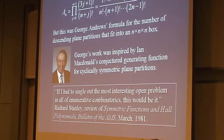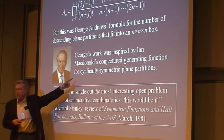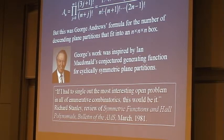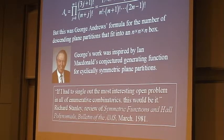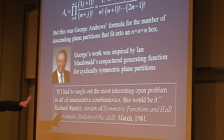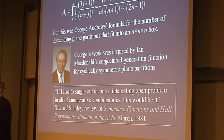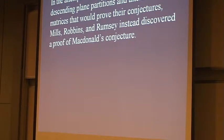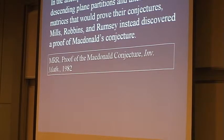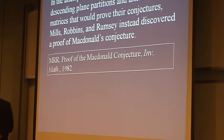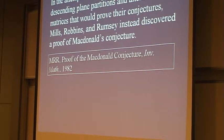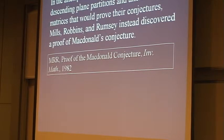The amazing thing is that Mills, Robbins, and Rumsey were interested in this problem because they hoped it would shed light on alternating sign matrices. In fact, it turned out to go in exactly the opposite direction — rather than the work of Andrews on descending plane partitions and MacDonald on cyclically symmetric plane partitions giving them insights into alternating sign matrices, what they'd figured out about alternating sign matrices gave them insights into those problems. In the attempt to find the connection, they actually succeeded in proving MacDonald's conjecture. This would appear in Inventiones in 1982 — proof of MacDonald's conjecture. It is a beautiful proof, really nice. The insights they got by trying to find this connection gave them an elegant proof of MacDonald's conjecture.